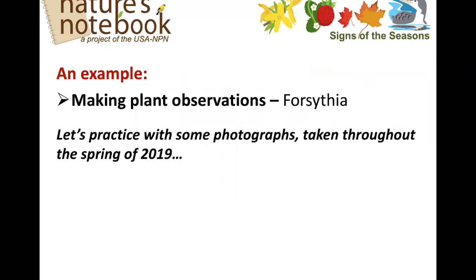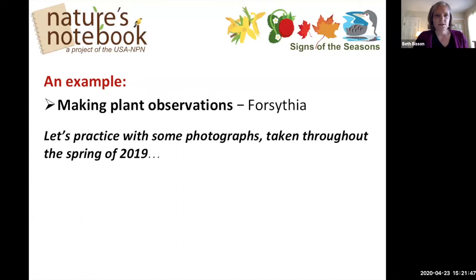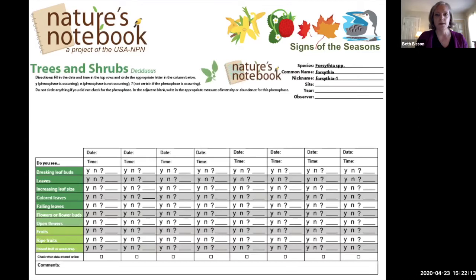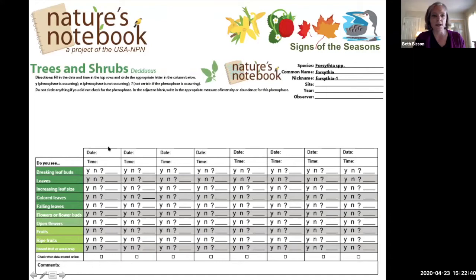Now Beth will take us through making plant observations. She'll run through an example using forsythia, which is very visible with its bright yellow flowers — one of the earliest to come out. She'll use photos taken throughout last season to show how it evolves. The same process applies whether using the app or a paper data sheet — it's a very user-friendly interface — and we're showing the data sheet so you can compare and understand how it works visually.